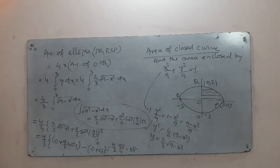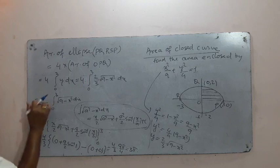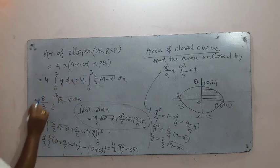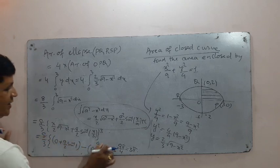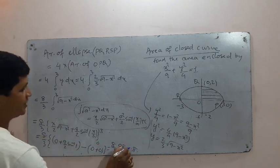This is all about the area enclosed — but note there is a mistake: 4 × 2 = 8, so the coefficient should be 8, not 4/3. Correcting this, the final answer is 6π.